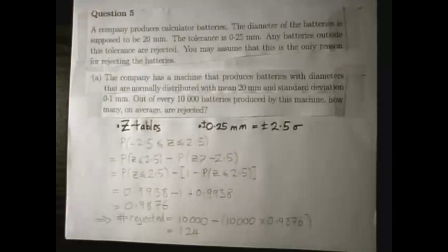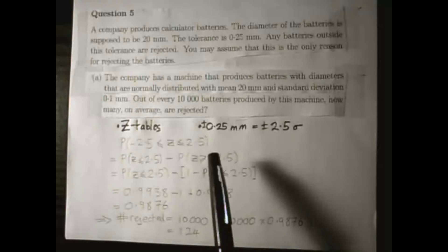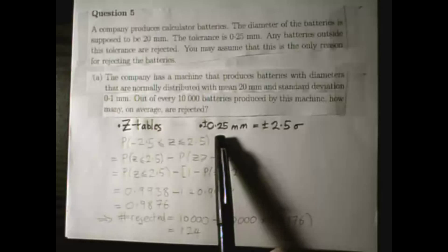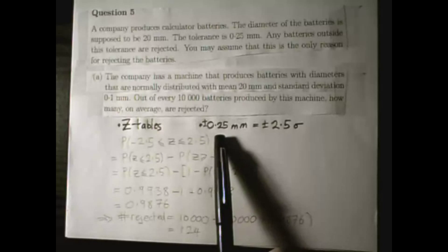The batteries get thrown out if they're smaller than 19.75mm or greater than 20.25mm, which is plus or minus 0.25mm away from the mean 20mm.